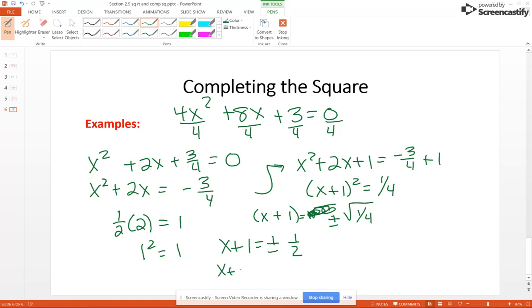So x plus 1 equals negative 1 half and x plus 1 equals positive 1 half. So we're going to subtract 1 from both sides. So this would become negative 3 halves and this would become negative 1 half.